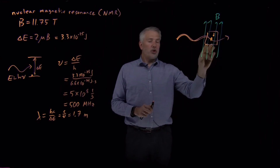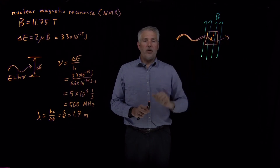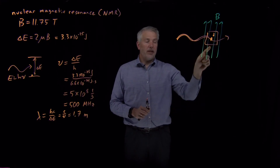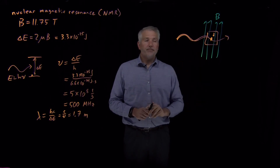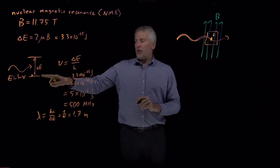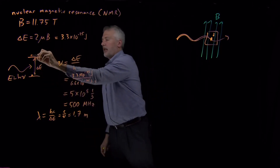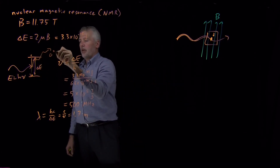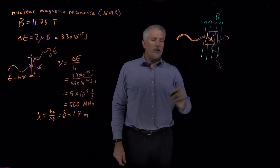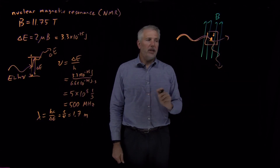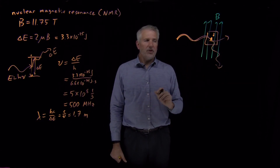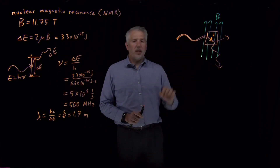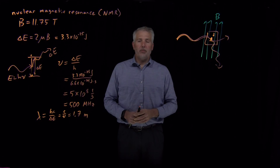We can detect nuclei either by measuring absorbance — how many radio frequency photons go in compared to how many come out — or even better, what goes up must come down. After exciting a nucleus to the upper state, it will eventually fall back down and emit a photon with the same energy, typically in a different direction, which we can detect. The earliest NMR instruments were exactly this: just proton detectors that determined how many protons in the sample absorbed energy of the appropriate frequency.